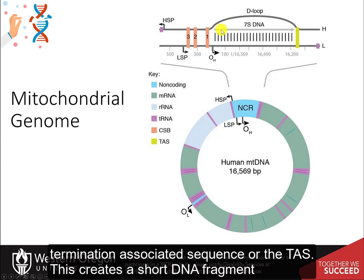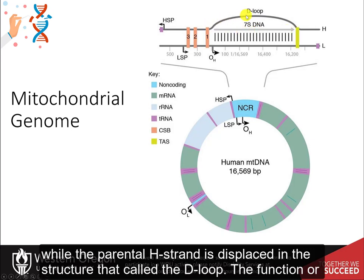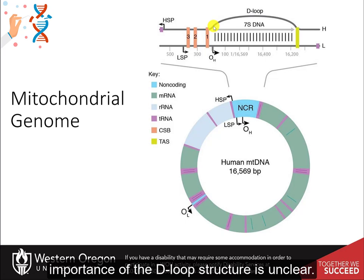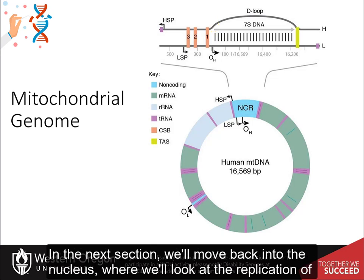This creates a short DNA fragment known as the 7S DNA fragment, which remains bound to the parental L strand, while the parental H strand is displaced in a structure called the D-loop. The function or importance of the D-loop structure is unclear, and just how replication is terminated at the TAS is also not yet known.